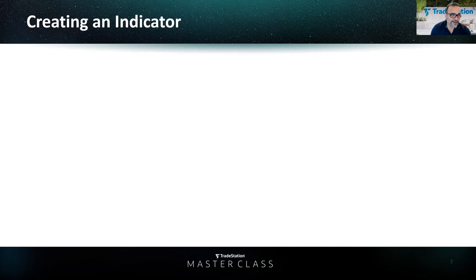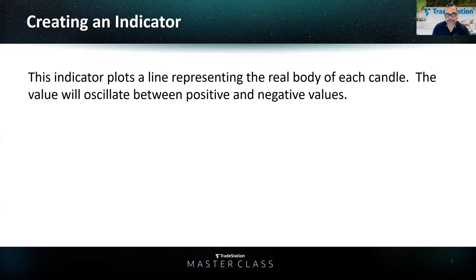Let's start creating our first indicator. In this class, we're going to create a simple indicator, then a simple show me, and then a simple strategy. This indicator plots a line representing the real body of each candle. The real body, for those that are candlestick followers, is the relationship between the open and the close — the thick part of the candle — not the high and the low, which is the range of the candle.